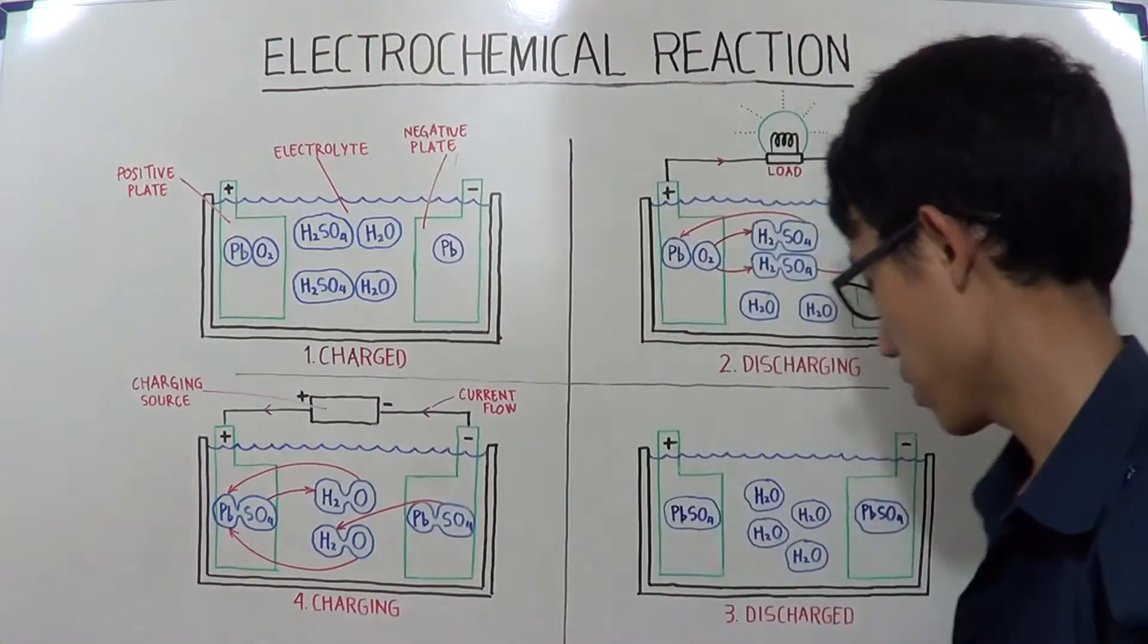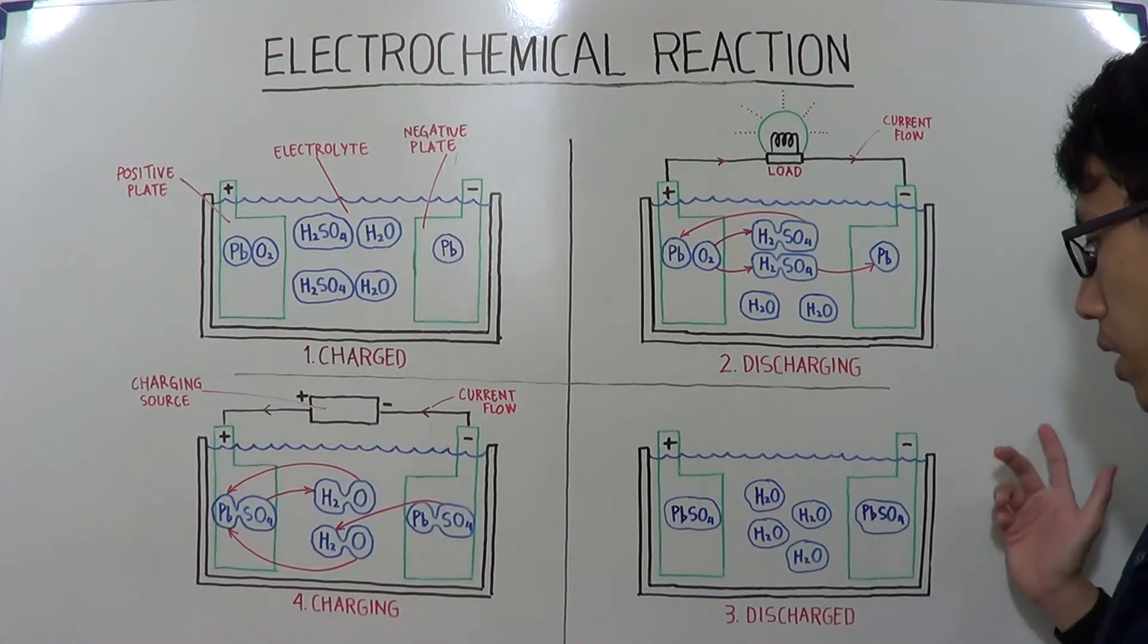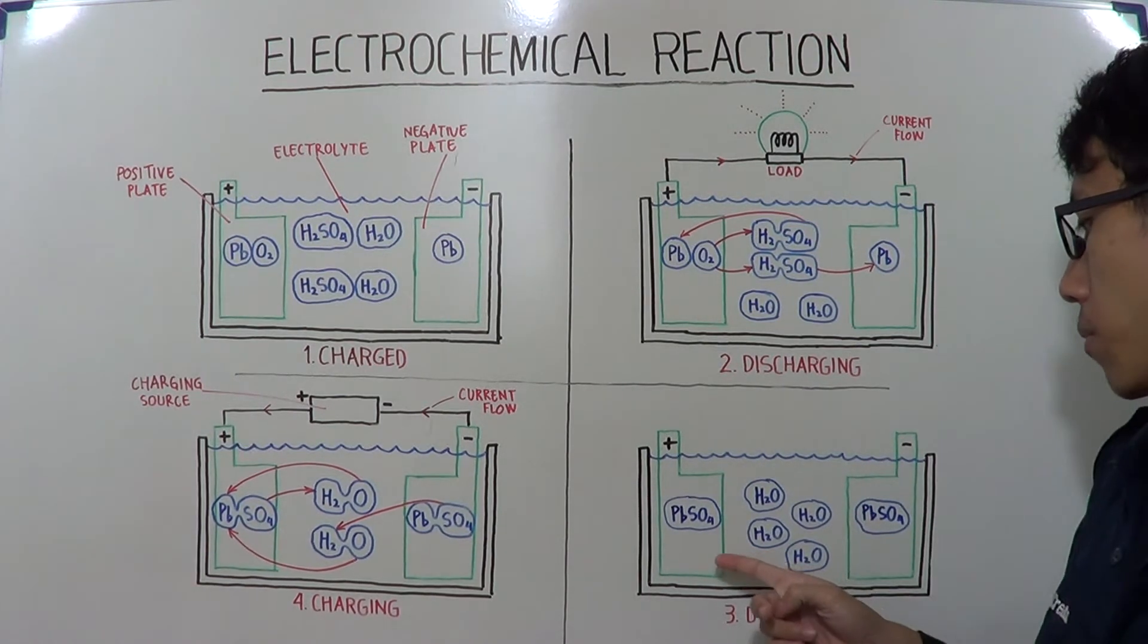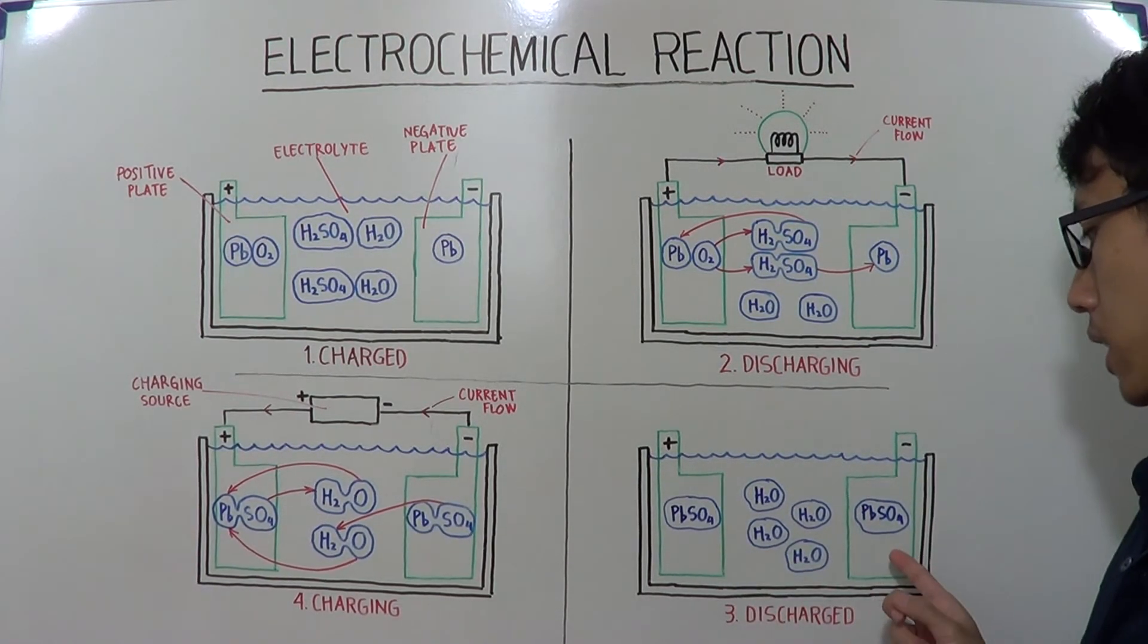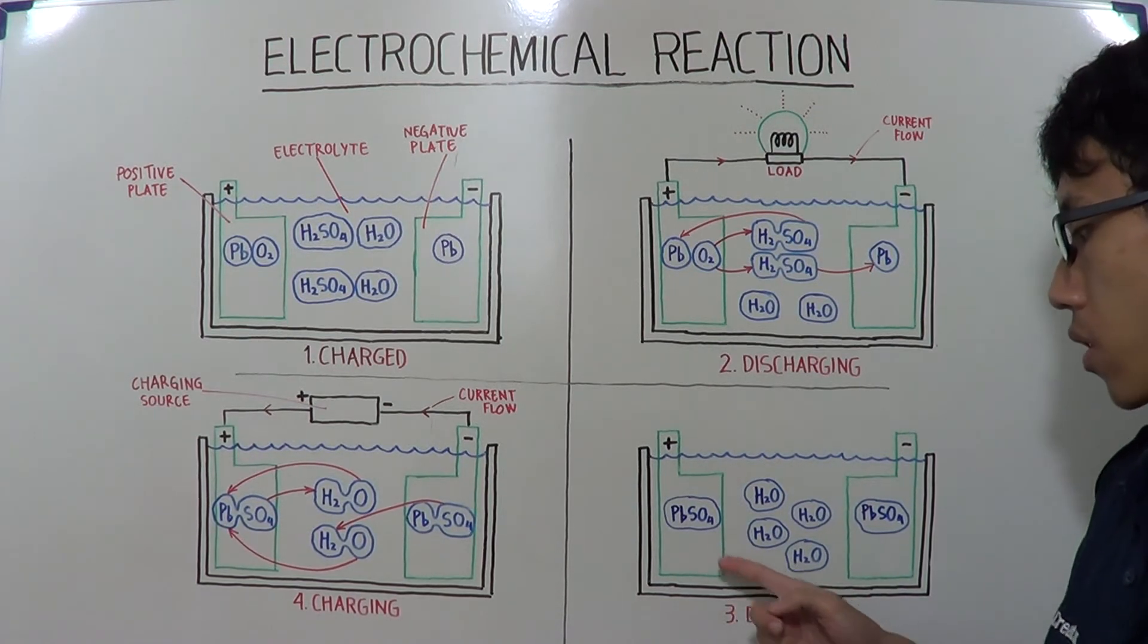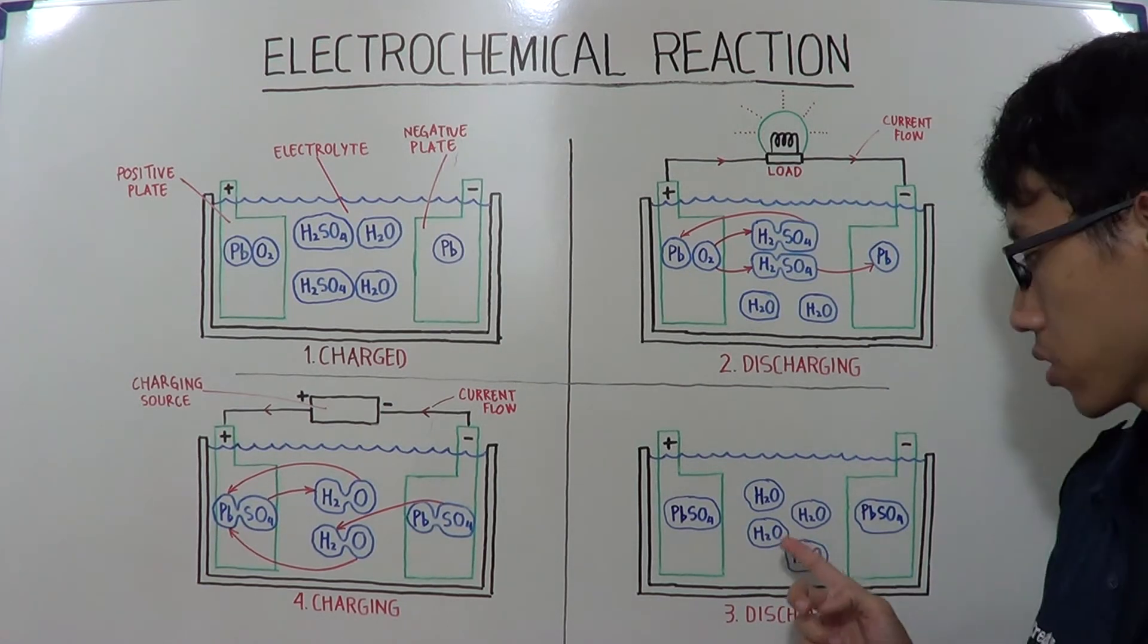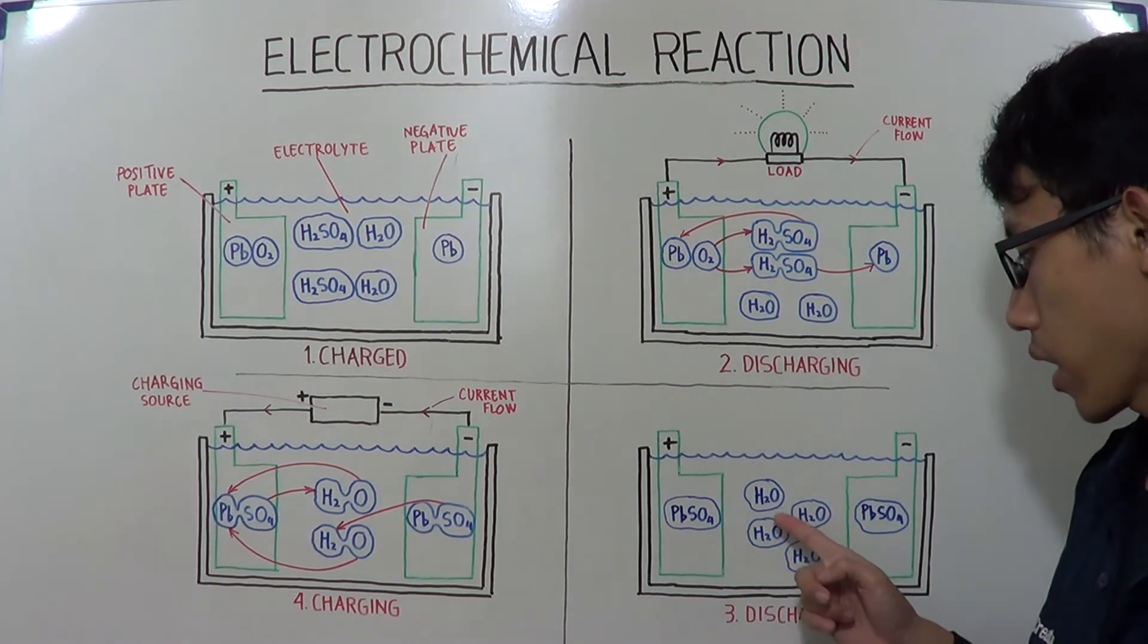The third stage is the discharged stage. In the fully discharged battery, both the positive and negative plates are covered with lead sulfate or PBSO4. And the electrolyte is diluted to mostly water or H2O.